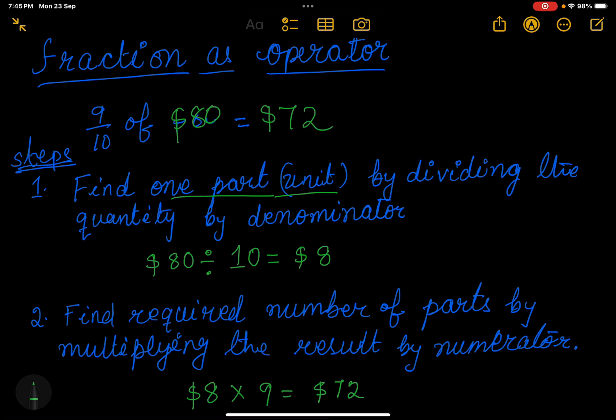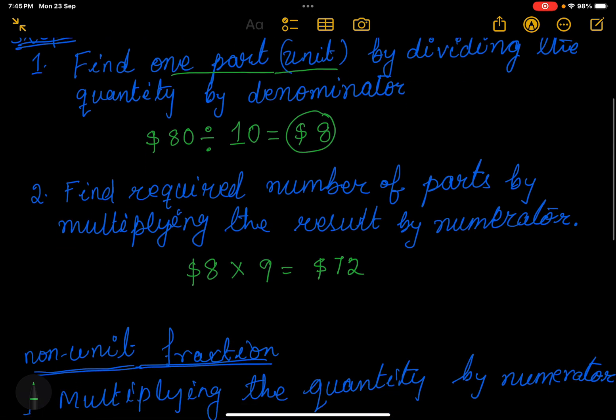So what we are doing: first we are dividing the quantity by the denominator, which gives $8, then $8 times the numerator gives $72. This is one way. The second way is